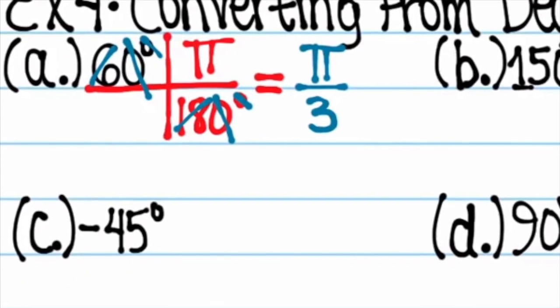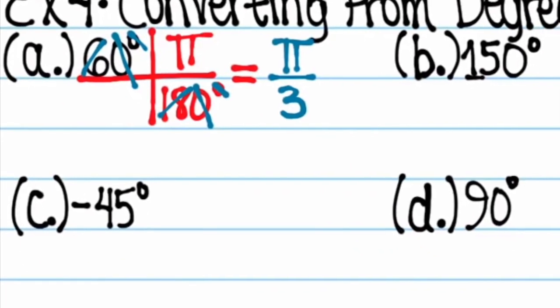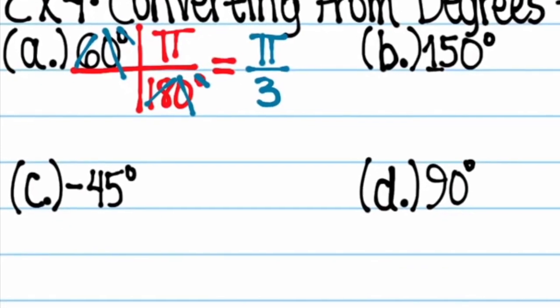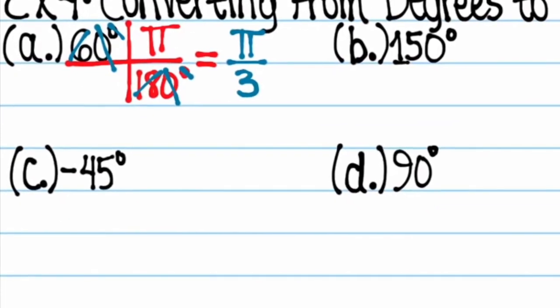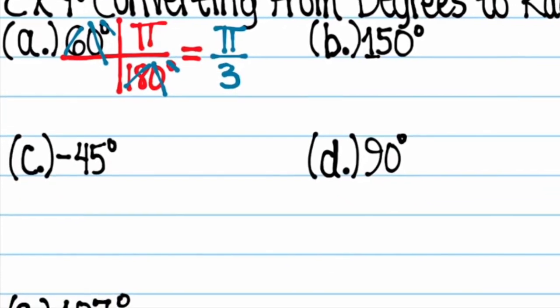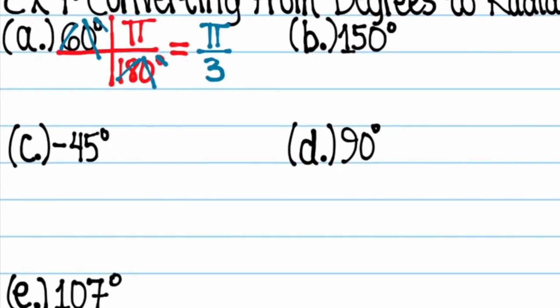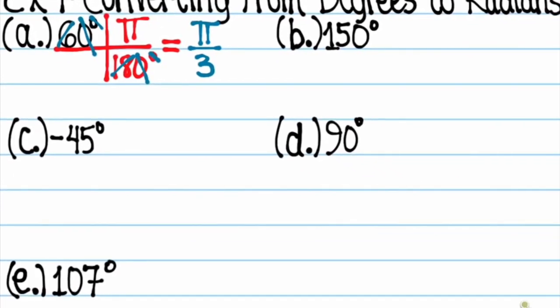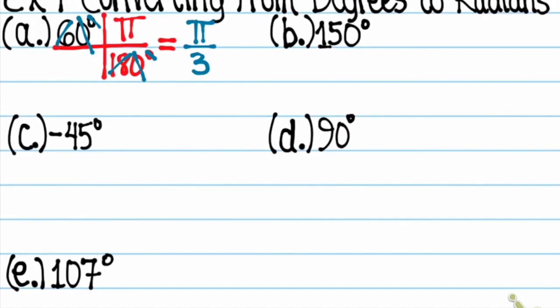If 180 degrees is equal to pi radians, it makes sense that 60 degrees, which is a third of 180, would equal one-third of pi radians.